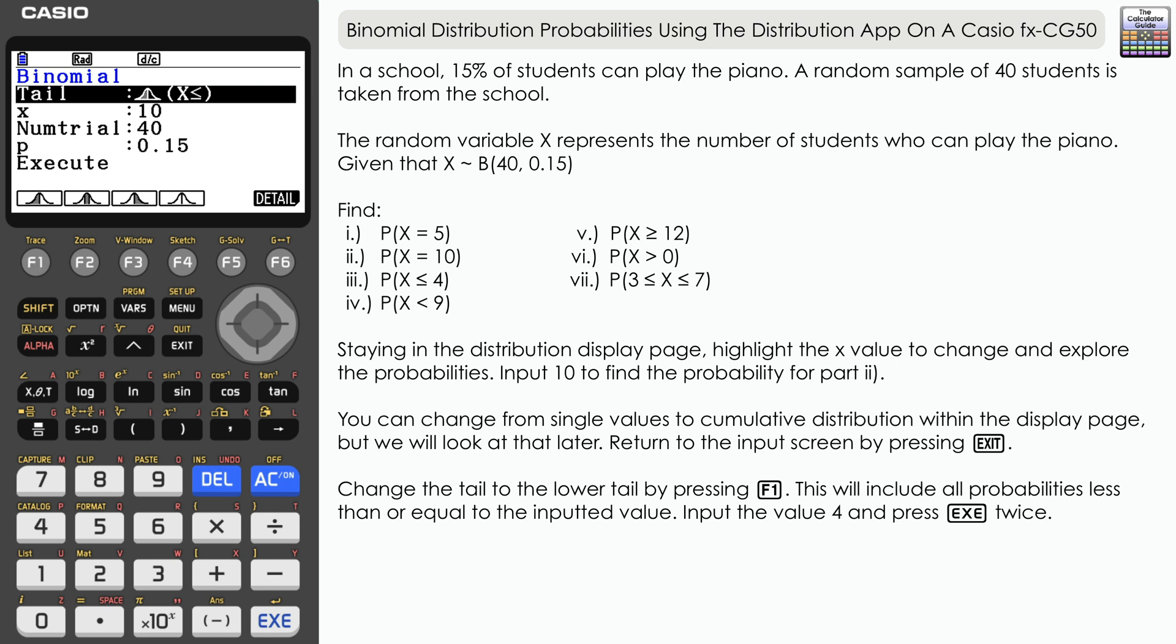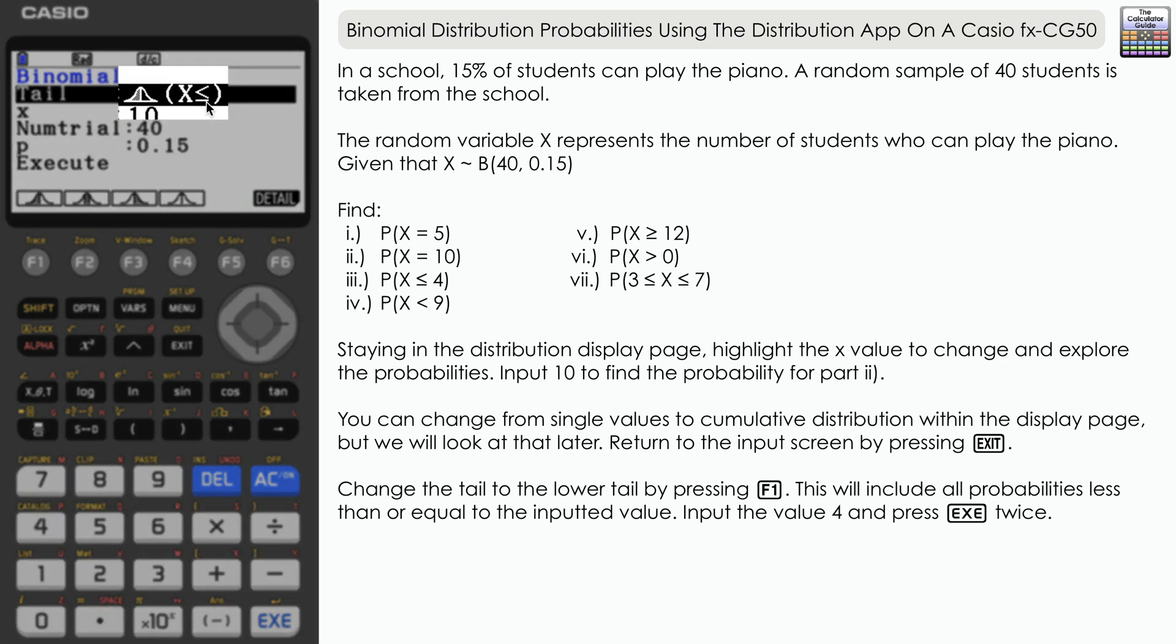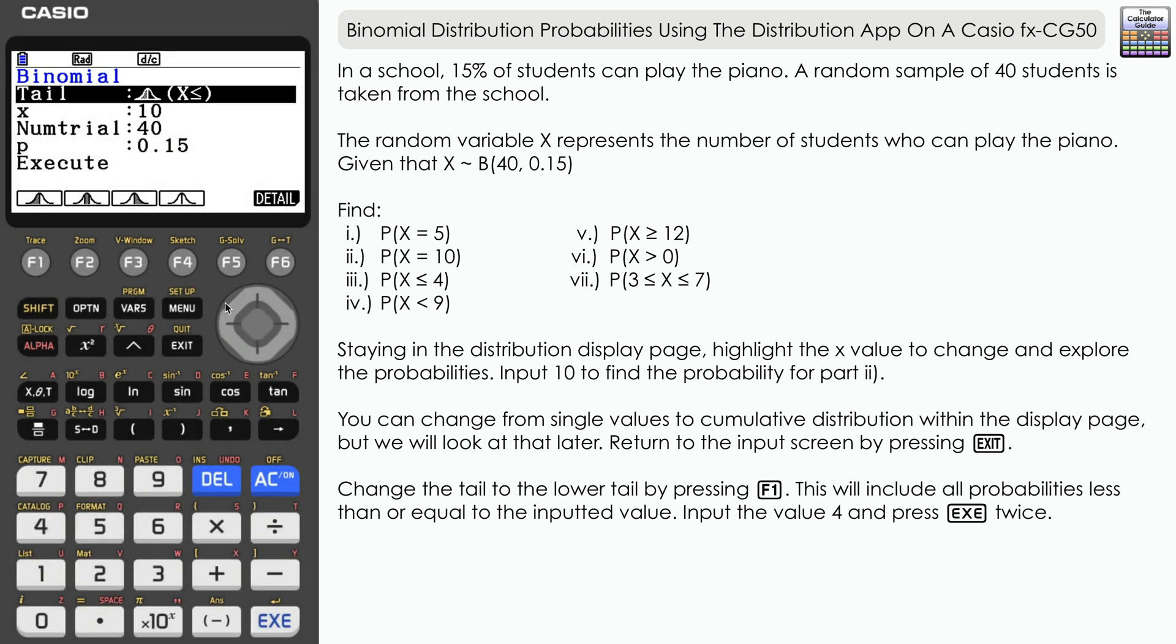And it's worth bearing in mind that it's X is less than or equal to, so we can equal the value of 4 as well. Let's change our X to 4. Number of trials and probability remain the same, so just press execute.